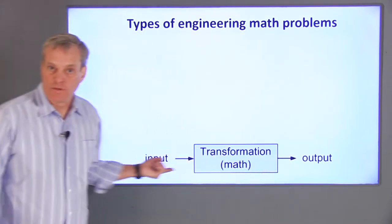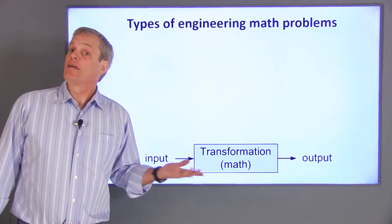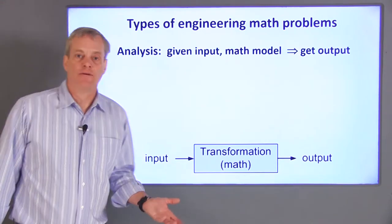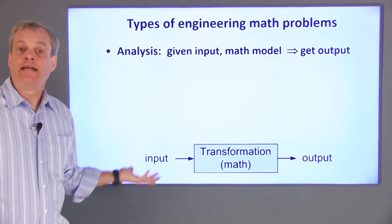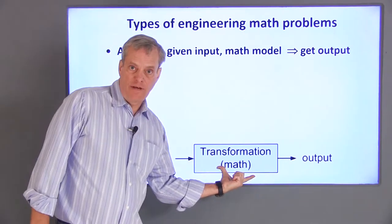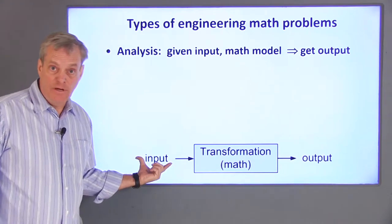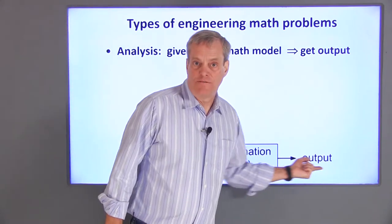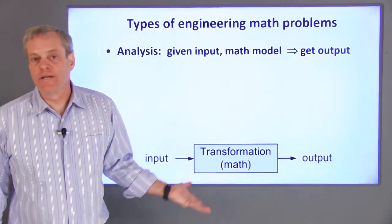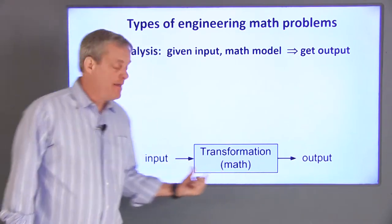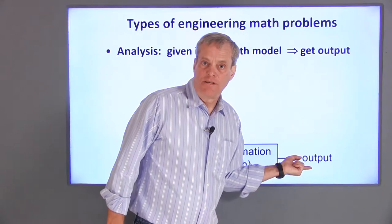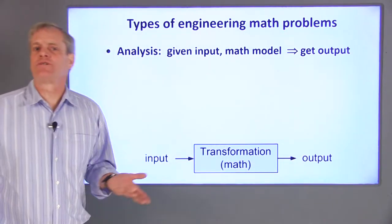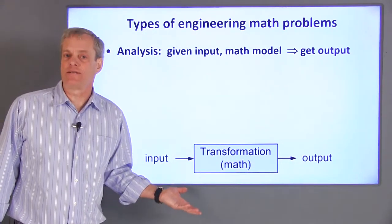This block diagram approach towards representing a system can be used in a variety of ways. The first and easiest is analysis. In analysis, we know the mathematical model for the system and the input and we need to find the output of the system. So in our spring example, if we know A and the weight applied to the spring, we can find the expected displacement. This is the closest to a typical problem in a mathematics class.